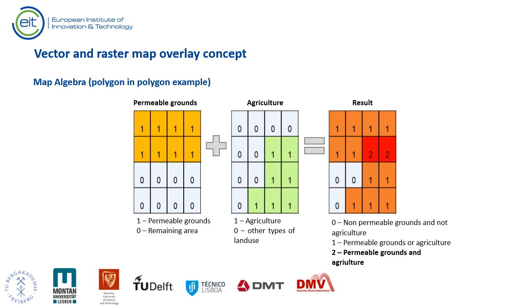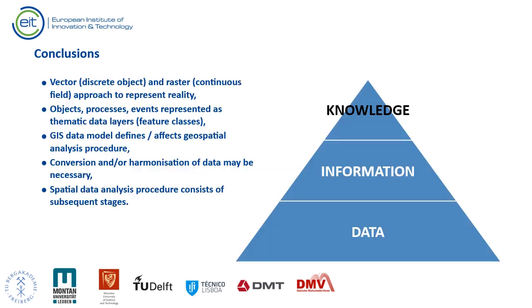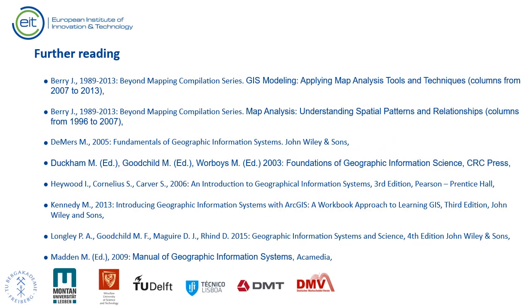In this lecture we have learned the basic concepts of geographic information systems, including what spatial data are, what the common GIS data models are, what data sources are available, what we can use GIS for, and how to solve common problems with GIS analytical functionality. More advanced concepts will be presented in the next lectures. You will find detailed explanations of the topics presented in this lecture in the textbooks shown in this slide.